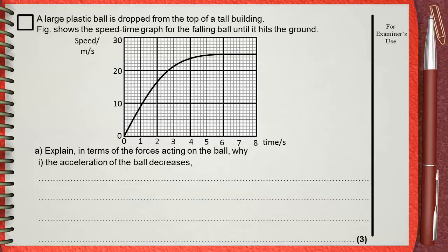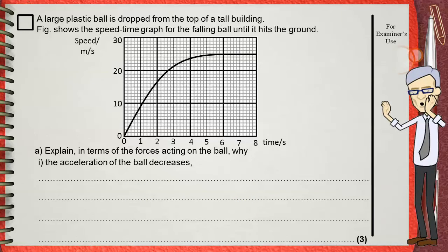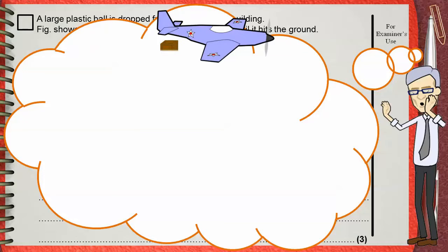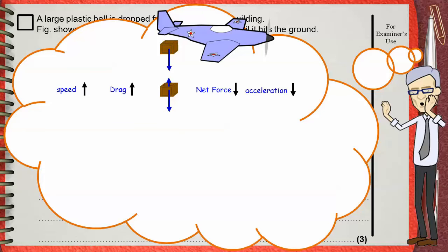First, we must remember how an object falls against air resistance. The only force that acts on this box at the beginning of its fall is its weight. As it starts to have a speed, it experiences some air resistance. So we say that as speed increases, the drag force on the box increases.